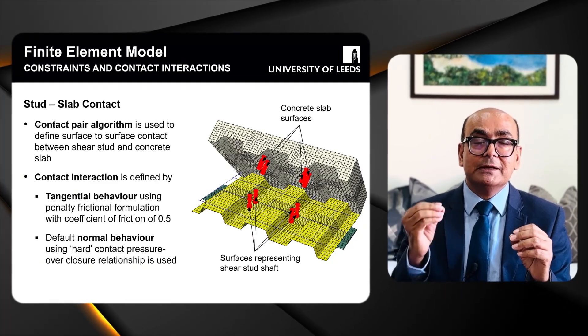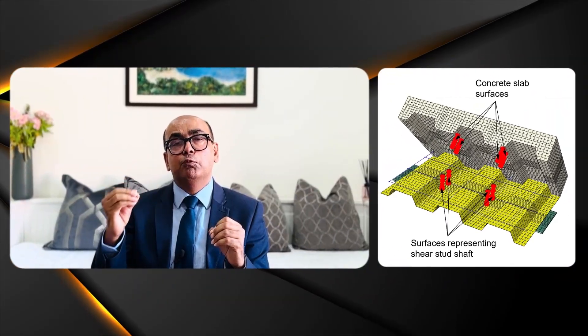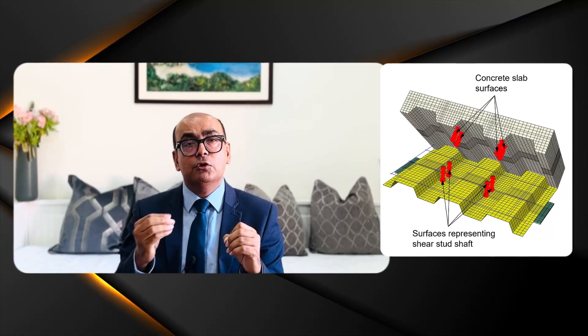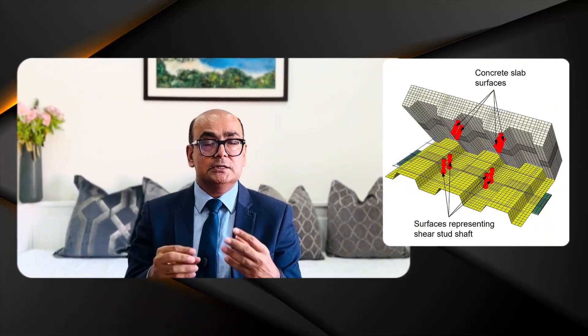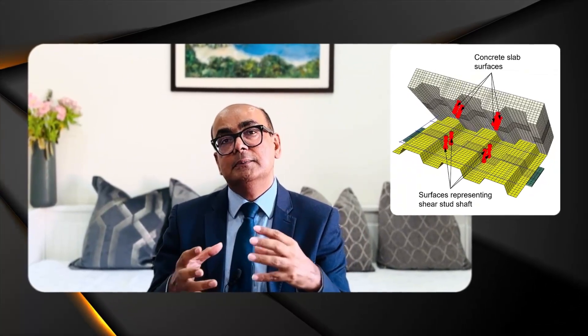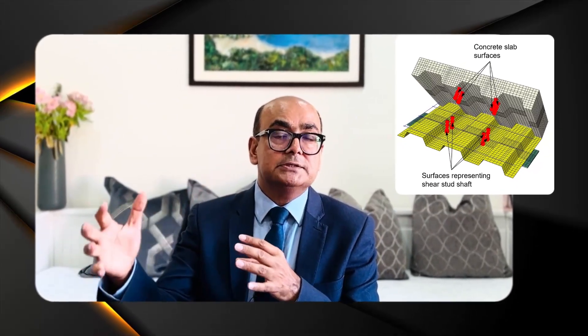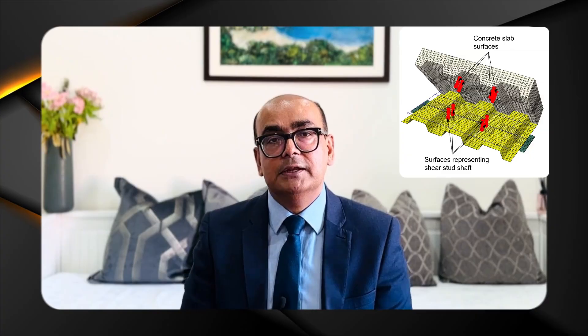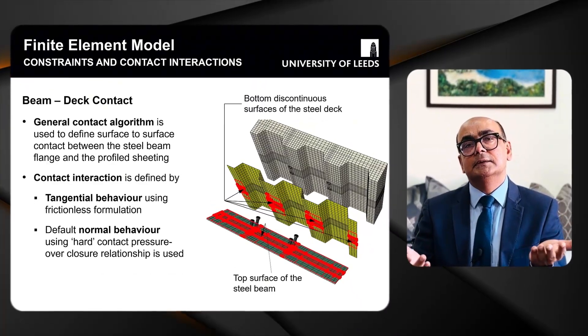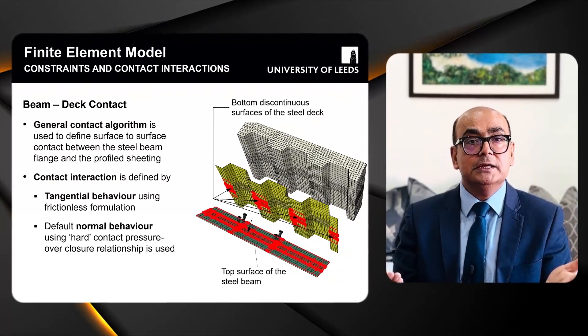How do you decide which surface is master and which is slave? The concrete volume is large, meaning the stiffness of concrete is higher than that of the shear studs. Normally we take the stronger material as master and the weaker as slave, but here because the stiffness of concrete is very high I took concrete as master and the shear studs as the slave surface. Beam-to-steel-deck contact is not critical, so tangential behavior was assumed frictionless with default normal behavior.